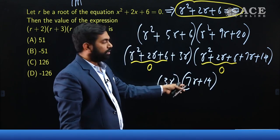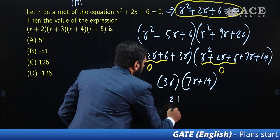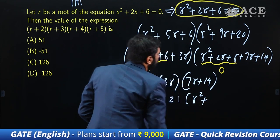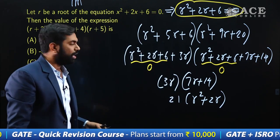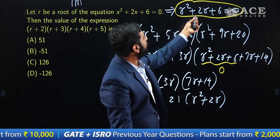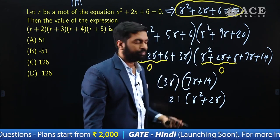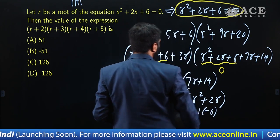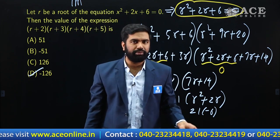Now 7 is common in 7r + 14, giving 7(r + 2). So the product is 3r × 7(r + 2) = 21(r² + 2r). According to the equation, r² + 2r = −6. So the answer is 21 × (−6) = −126. That's the answer for this question. Let's go to the next problem.